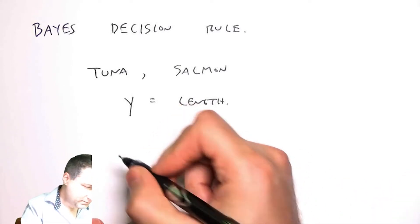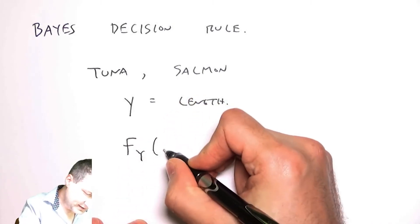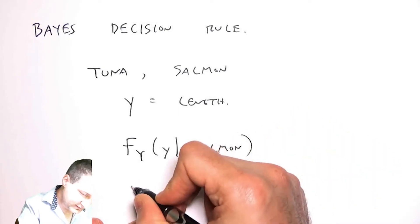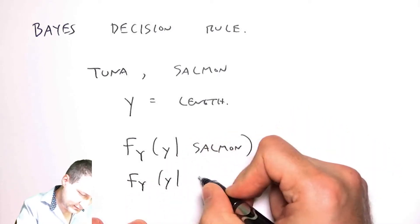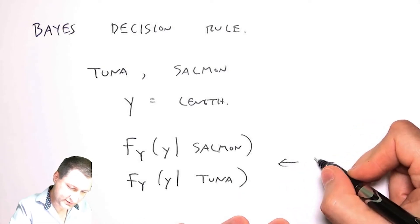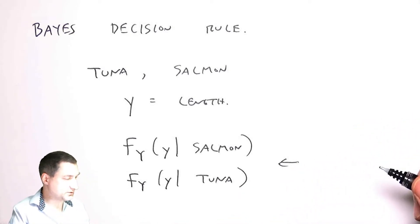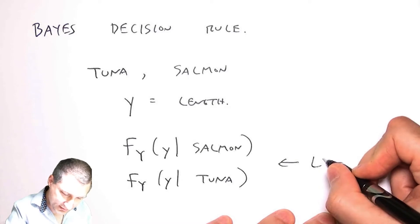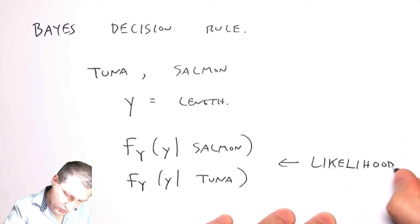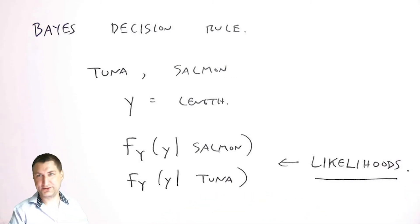In each case, what I have is a PDF on the feature given each of the fish types. These were basically what we called class conditional probabilities, and actually in this context we often call them likelihoods.